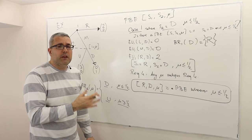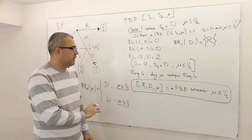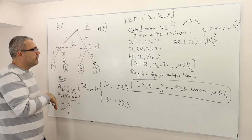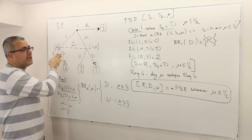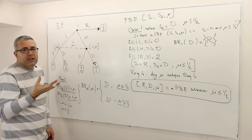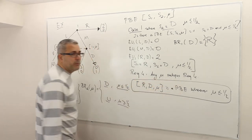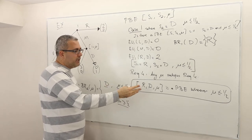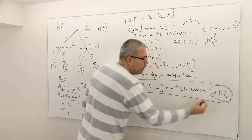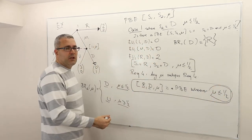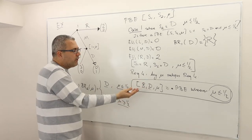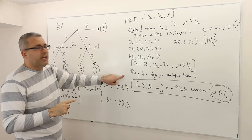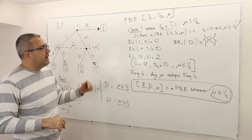That means there are infinitely many perfect Bayesian equilibria of this form. Player one plays R and finishes the game, player two's strategy is D, but she will never be able to play. She believes that it is more likely she is in one particular decision node. You can change mu and get another PBE, but all of them are outcome equivalent — they all give those players payoffs of two and two. This is just case one, so I need to check case two as well.